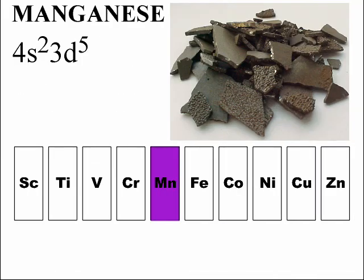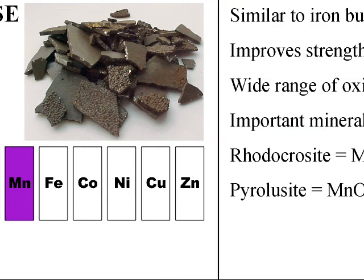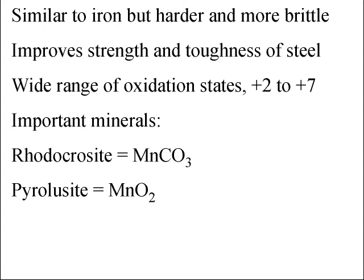Moving from chromium to manganese, the fifth member of the d-block. The extra electron goes back into the 4s, so the electron configuration for manganese is 4s² 3d⁵. Manganese is similar to iron but harder and more brittle. It improves the strength and toughness of steel and is often alloyed with steel. Manganese exhibits a wide range of oxidation states from +2 all the way up to +7.